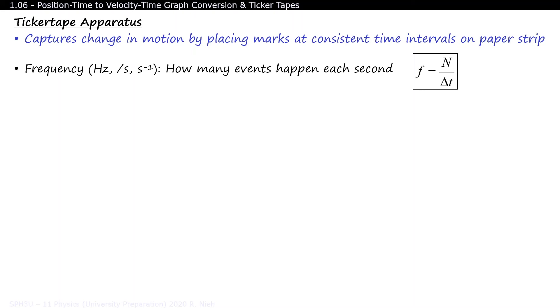However, we're more interested in the period of the machine, which is how long does it take for it to make a dot. This can be determined by dividing the total time of the experiment by the number of events. You might notice that the period and frequency are reciprocals of each other.